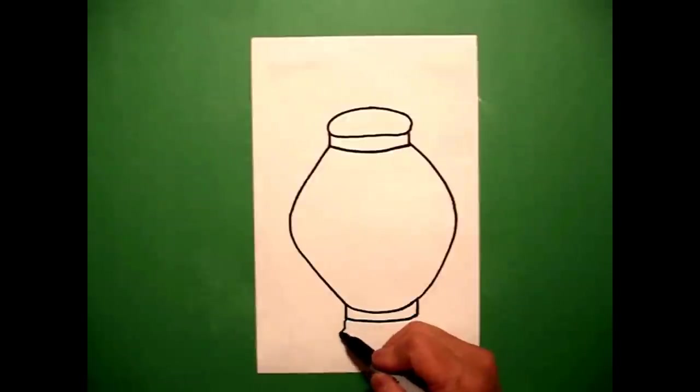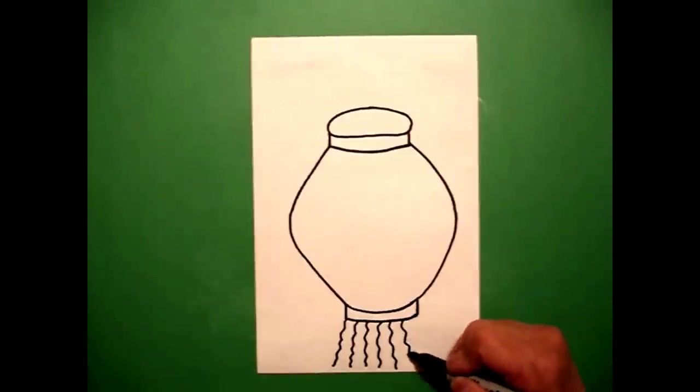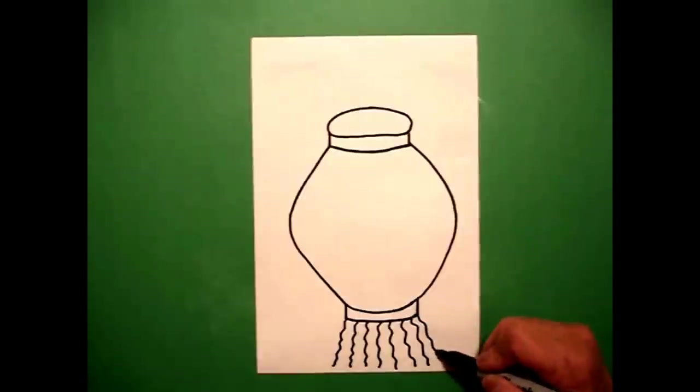Now, from the bottom, I'm going to draw a wavy, wavy line, one, wavy line, two, three, four, five, six, seven, eight. Some of you might need to draw more, some of you might draw less.